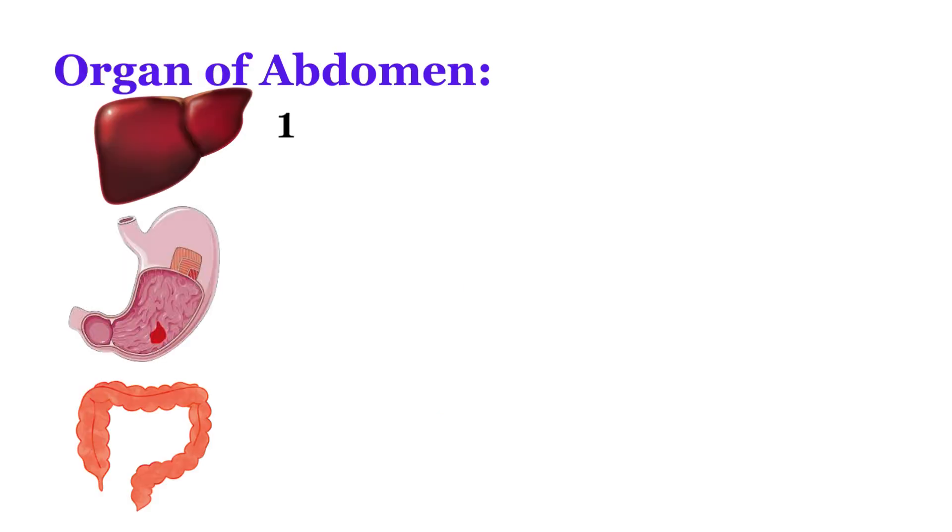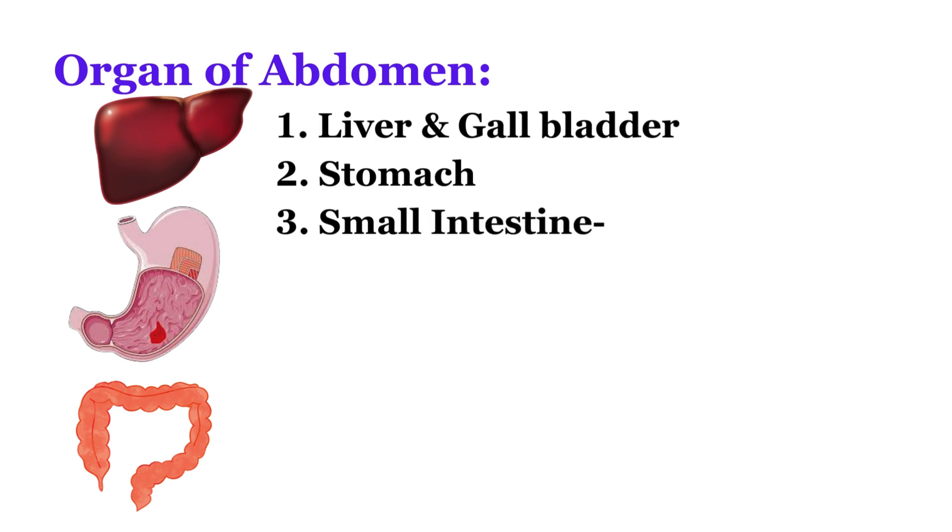Organs of abdomen. 1. Liver and gallbladder. 2. Stomach. 3. Small intestine: A. Duodenum, B. Jejunum, C. Ileum.